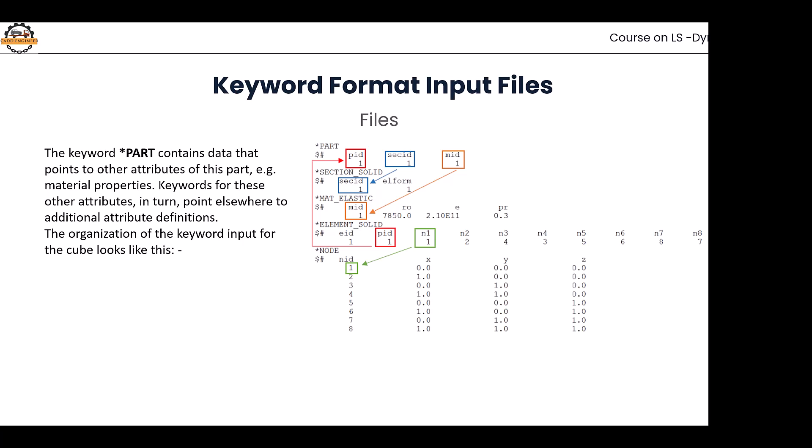If I have multiple parts and materials, the ID will increase to two, three, four—however many materials you're using. Section stands for the element type we are defining on the body, like solid element or shell element. Section ID stands for this: if you have a solid part, we use section solid; if you have a shell part, we use shell sections.